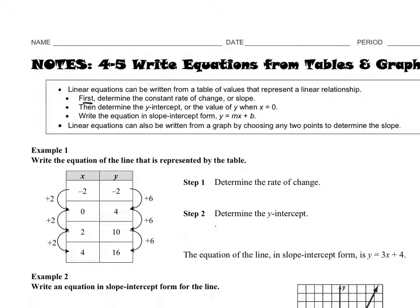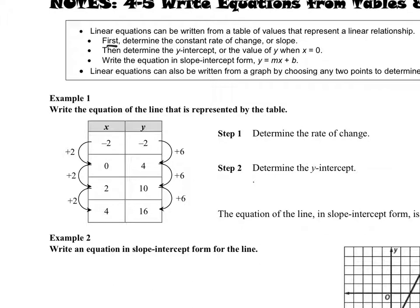The first step says determine the constant rate of change. Determining the constant rate of change is finding this change that we've been finding. Right here they already clearly wrote it for you, but I'm just going to go over it. So negative 2 to 4 is 6, 4 to 10 is 6, 10 to 16 is 6. So that's the change in y.